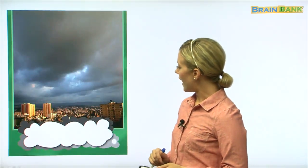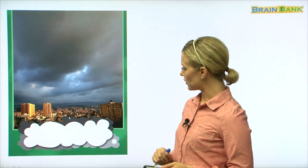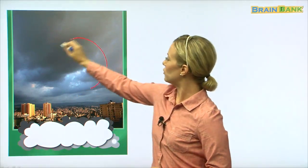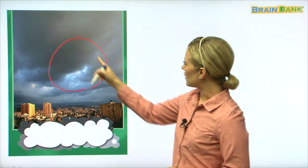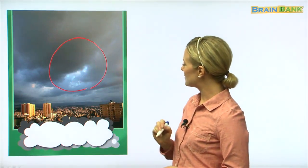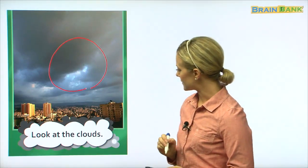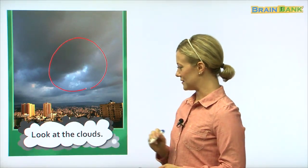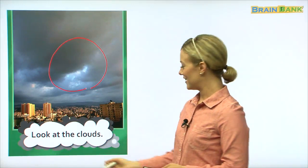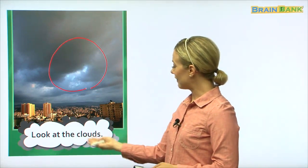So, now, here we have another picture. It looks like a big city again. What does the weather look like? Is it beautiful and sunny? No, not really. This is storm weather. Here we have dark clouds. Let's see what it says. Look at the clouds. Can you read with me? Look at the clouds.